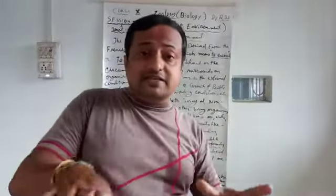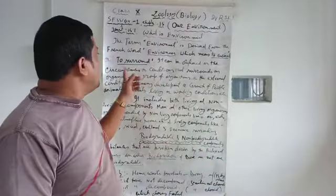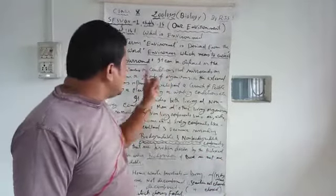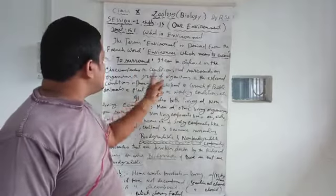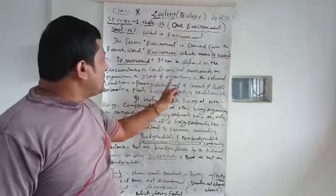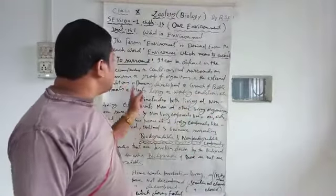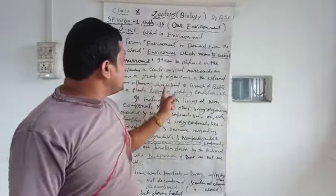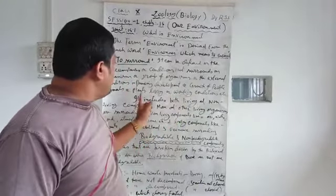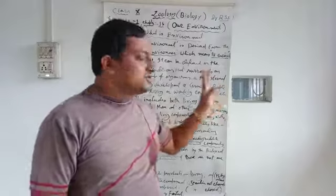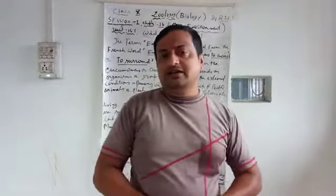The word 'environment' is derived from the French word which means to encircle, that means those present in your surroundings. It can also be defined as circumstances or conditions that surround an organism or group of organisms - the external conditions influencing the development of people, animals, plants, and their living and working conditions.